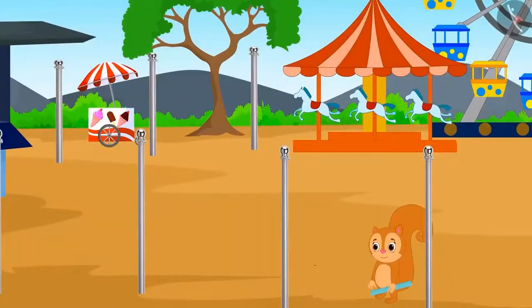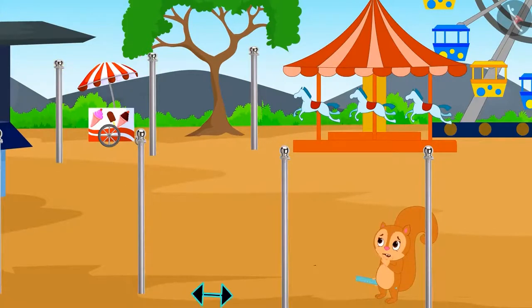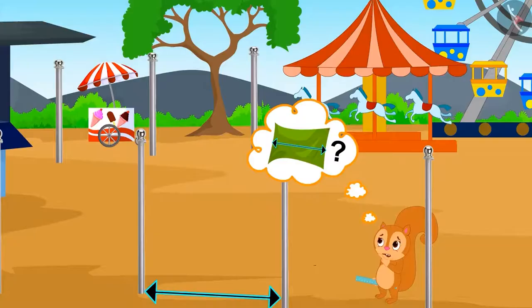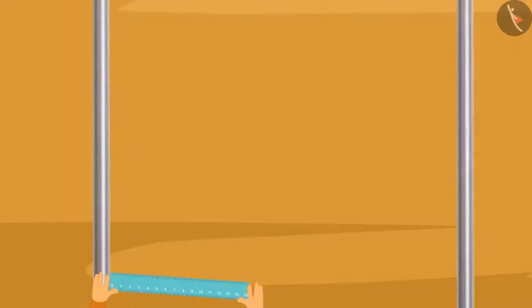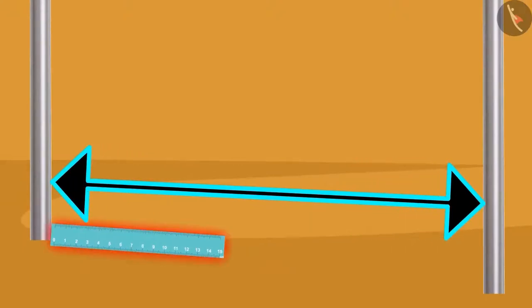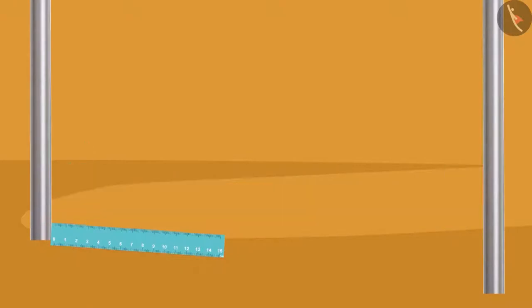Poles were erected at the places where curtains were to be hung. Chanda thought that if she measures the distance between the poles, then she will get the size of the curtain. Chanda began to measure the distance between the poles with her ruler. But Chanda's ruler is very small, and she is unable to measure the distance between the poles with it.